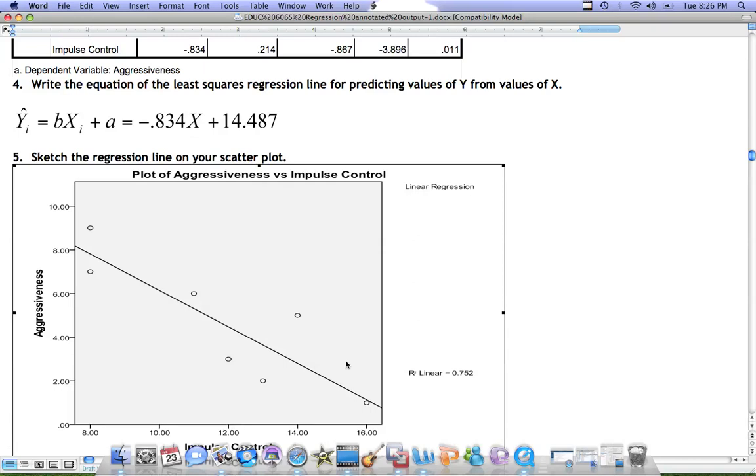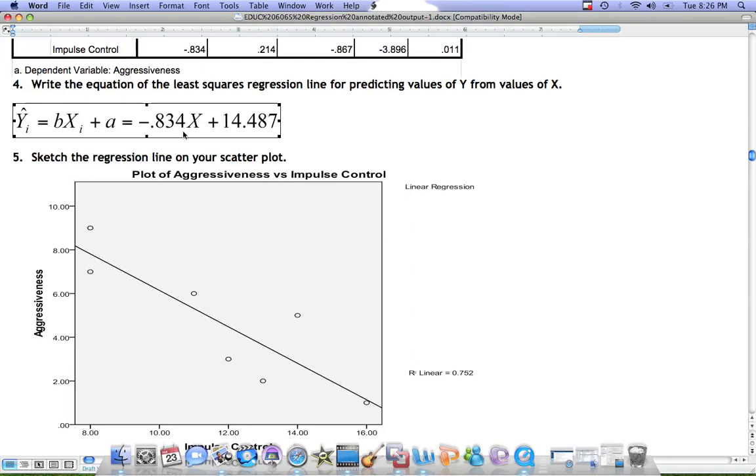In order to plot a line, we need two points that fall on the line. So, using our regression line, we could choose a value such as X equals 10, plug in the 10 and get the corresponding Y value, and plot that value on our curve. We could do the same thing for X equals 14, get the corresponding Y value, and then connect the dots.